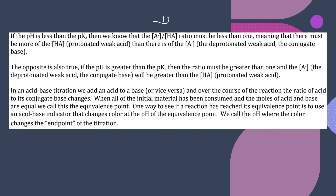If your pH is less than the pKa, the anion-to-acid ratio must be less than one — there must be more of the protonated weak acid. If your pH is greater than the pKa, then the ratio must be greater than one, and the concentration of the conjugate base will be greater than the protonated weak acid.